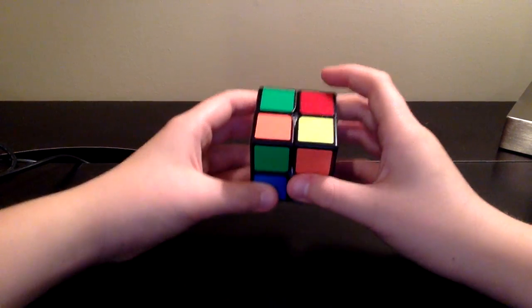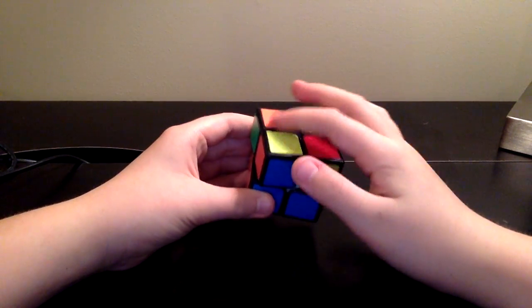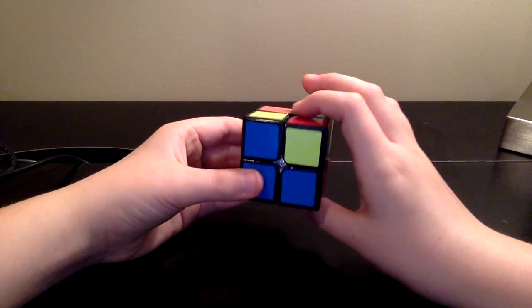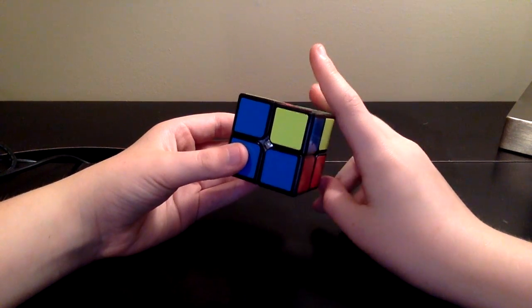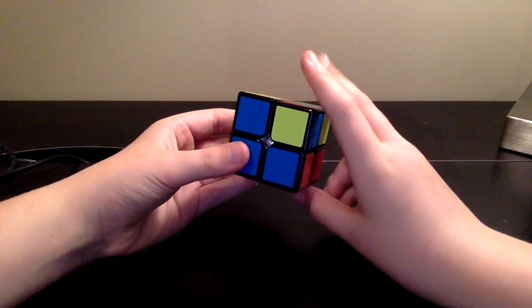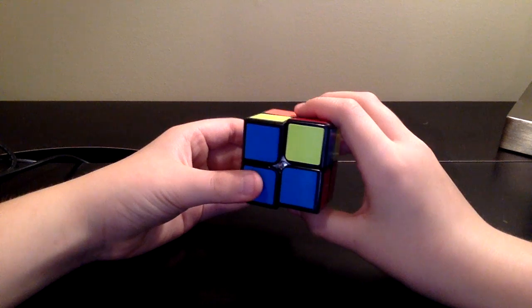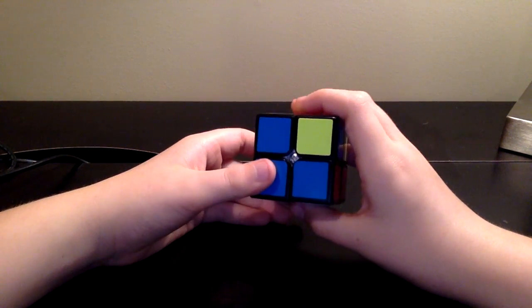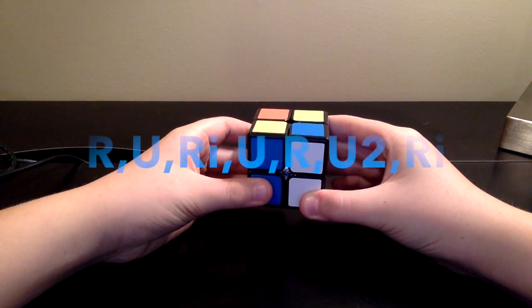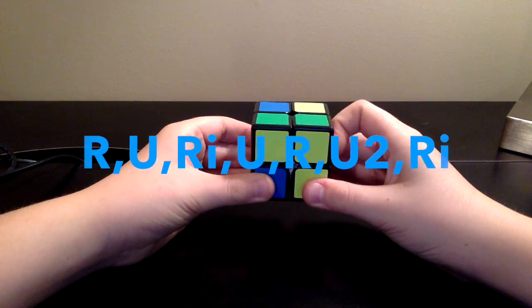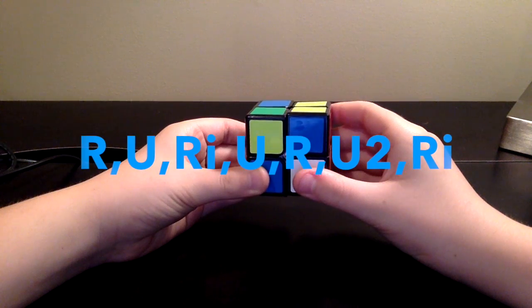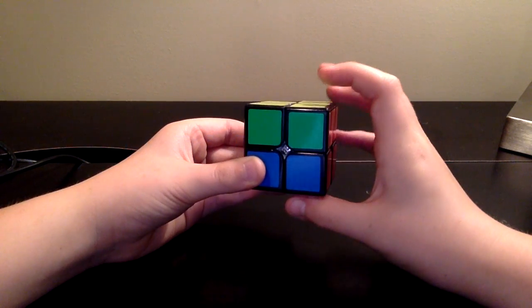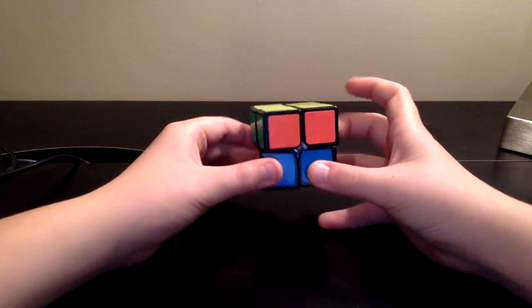The next step is solving this yellow layer, or not layer, side. So to do this, we need to do sequences. This is one of the two sequences that you will need to learn to solve the two by two. It's this sequence, and it's going to be on the screen now: R U R I U R U U R I. That just happened to solve it, but there's actually another step at some time.